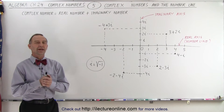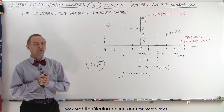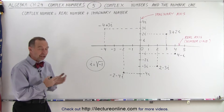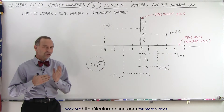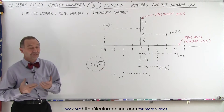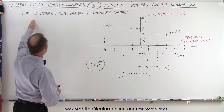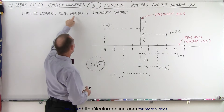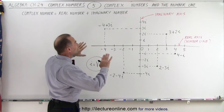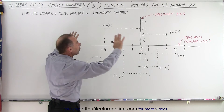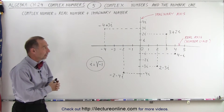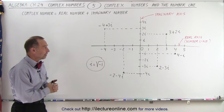Welcome to our lecture online. Real numbers can be found on the real number line, imaginary numbers can be found on the imaginary number line, but where can we find complex numbers? Since by definition a complex number is the sum of a real number and an imaginary number, complex numbers can be found anywhere else away from the real number line and away from the imaginary number line — the real axis and the imaginary axis.